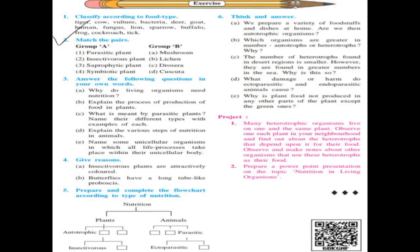Match the pairs: Parasitic plant – Fasputa. Insectivores plant – Drosera. Saprophytic plant – Mushroom. Symbiotic plant – Lichen.